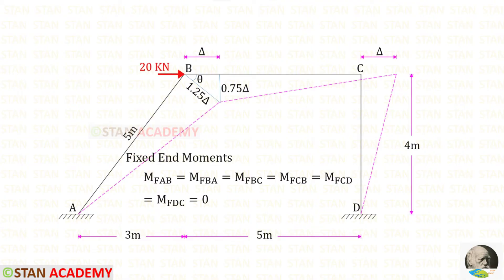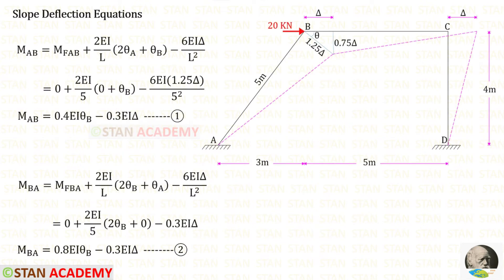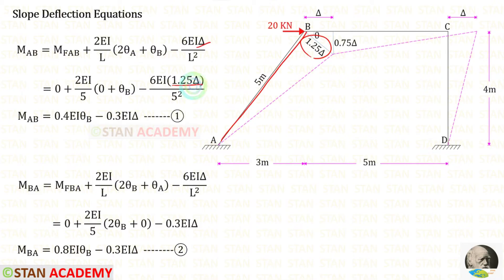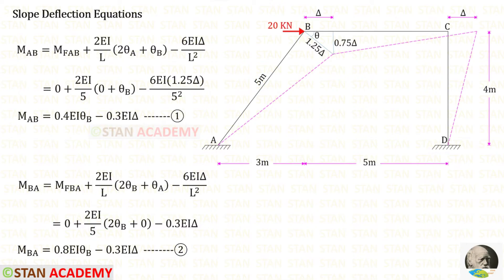We know that in this frame there is no member load, so all of the fixed end moments are zero. Now let us start making the slope deflection equations. First, let us make them for the inclined member AB. The fixed end moments are zero. Since this member is subjected to sway, we have to add the sway term to the equations. For this member, the sway is 1.25 delta, so instead of delta we apply 1.25 delta. Since the sway occurs towards the right side, the sway moments will be negative. The length of AB is 5. Since at point A there is a fixed support, theta-A equals zero. Finally, for the inclined member AB, we have made two equations.